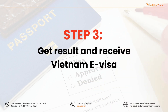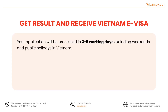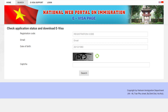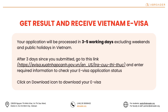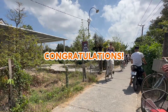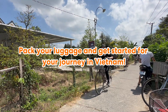Step 3: Get results and receive your Vietnam e-visa. Your application will be processed in three to five working days, excluding weekends and public holidays in Vietnam. After three to five working days since you submitted, go to the link or search for 'Check Application Status and Download Vietnam e-Visa' and click on the first result. Then, enter the required information to check your e-visa application status. If it is granted, your e-visa will look like this — click on the download icon to download your e-visa. And voila! If your application is successful, congratulations! Pack your luggage and get started on your journey in Vietnam!